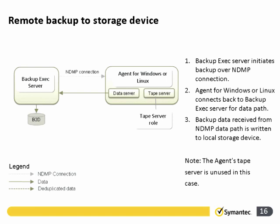Let's look at how these evaluations happen. In a standard backup without data deduplication, the Backup Exec server makes an NDMP connection to the Agent for Windows or Linux. That agent uses its data server role to package data into MTF format and send it back to the Backup Exec server, where it's stored on disk or tape. The tape server side of the agent is not used — the agent simply uses the data server side of the NDMP connection to package and send full data.